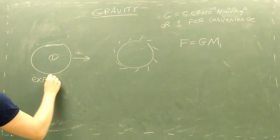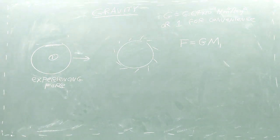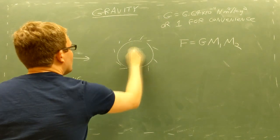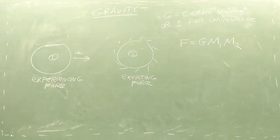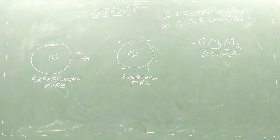Second, there's the mass of the object experiencing the force. We'll label this object with a 1. Next, there's the mass of the object exerting the force. We'll label this object with a 2. Next, we divide by the square of the distance between the two objects. Everything we have so far would give us the magnitude of this force.